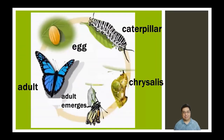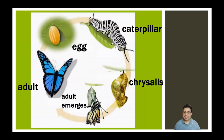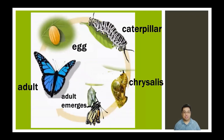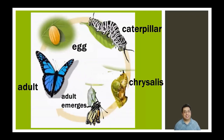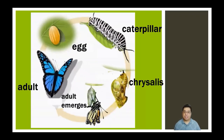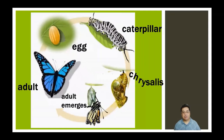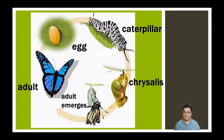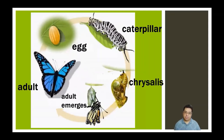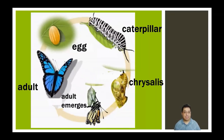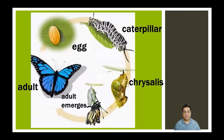For the butterfly, I've got these stages here. The first stage of the butterfly is always going to be an egg. Then it will change to a caterpillar. Then it becomes a chrysalis. And then the adult emerges out of the chrysalis, and then you have an adult butterfly. So these are the stages for the butterfly.